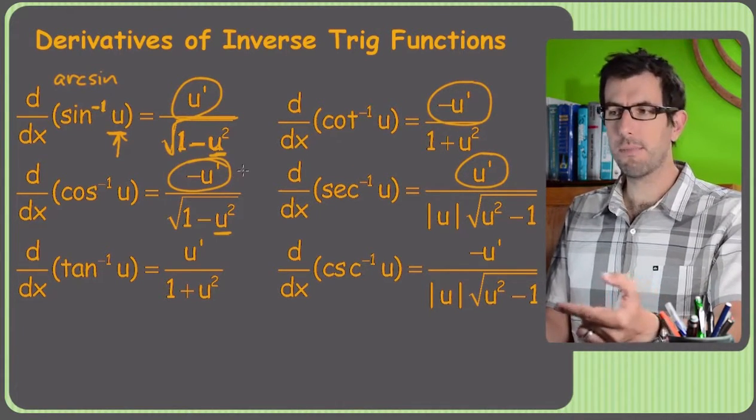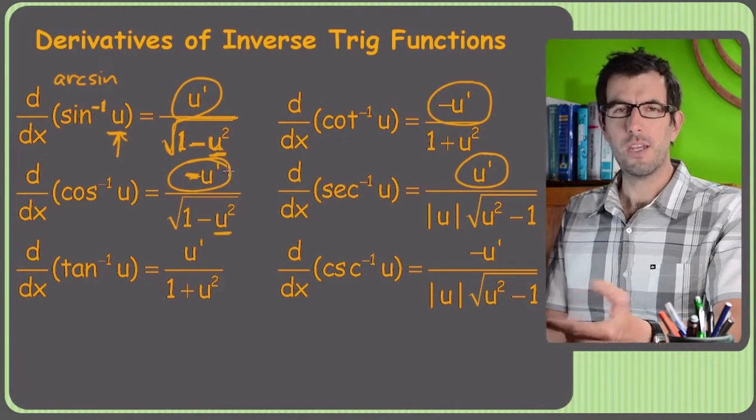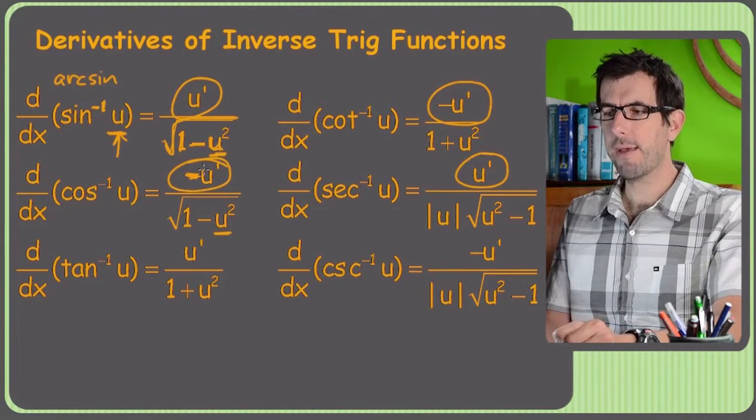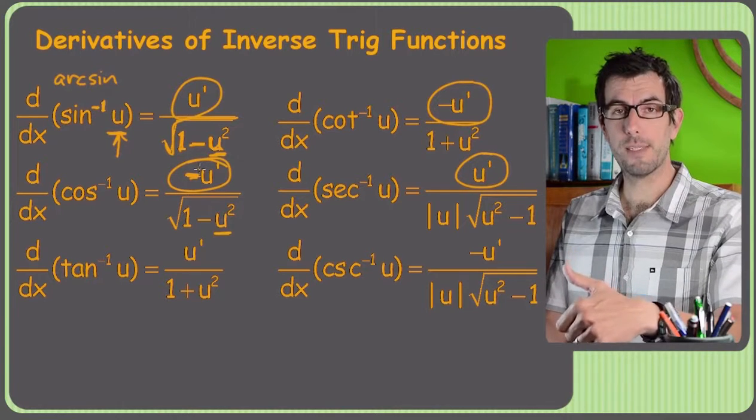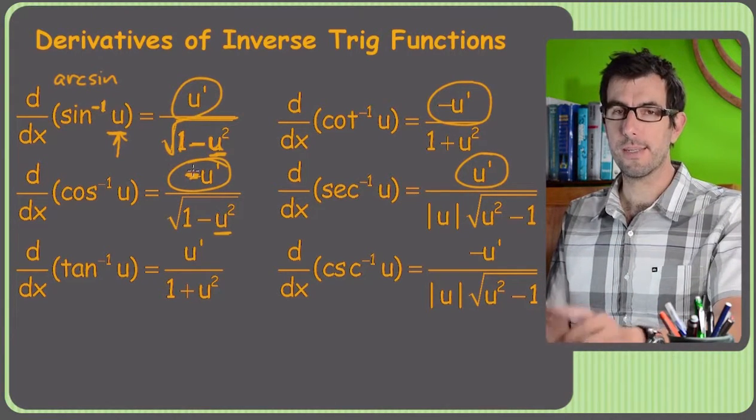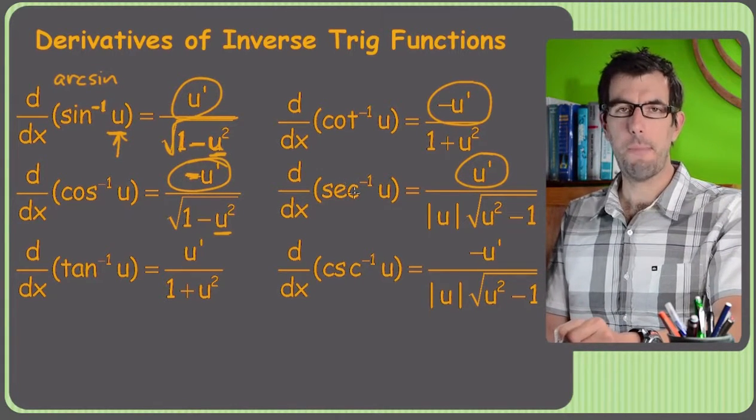And as we're used to seeing, some of these have positive U primes and others have negatives. You know how it is with trig functions. Some of them have pluses. Some of them have negatives on the right side. It's kind of half and half. So that's why if you are going to memorize these, be really careful. But like I said, I wouldn't memorize them unless you have a really mean teacher to make you memorize this particular batch of formulas.